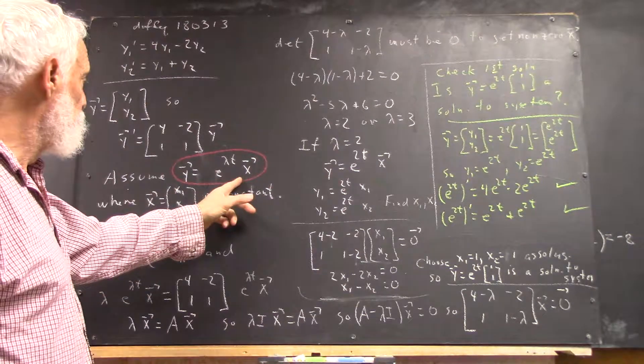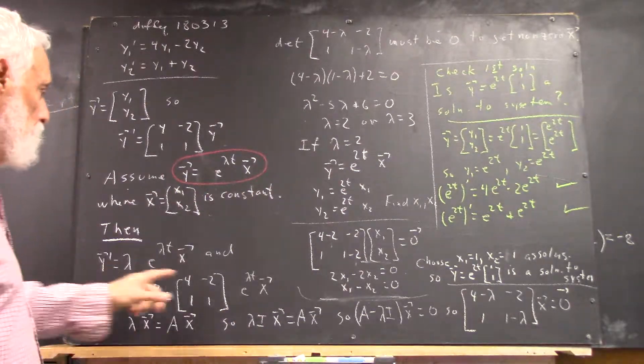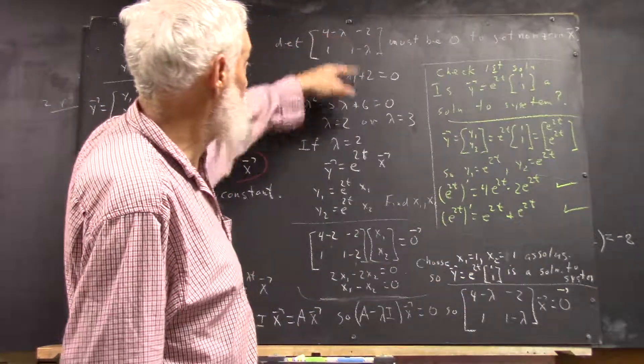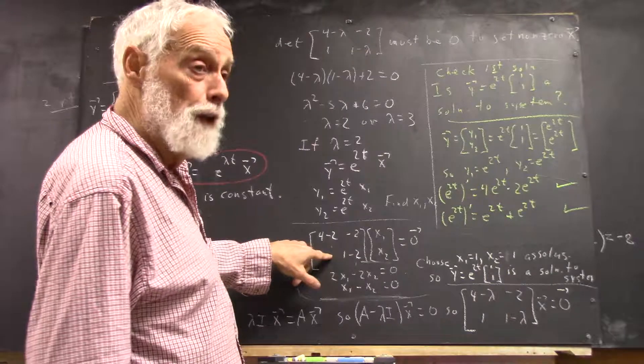But you start with this assumption. You work through this, and you get your characteristic equation. You solve it for lambda, and then you find your solutions.